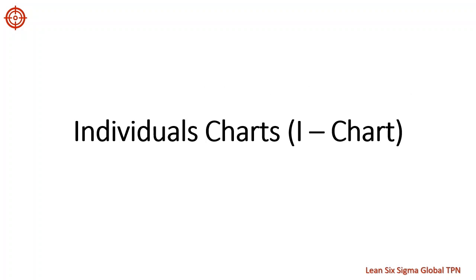Let's talk about the individual chart or I chart. An individual chart is a control chart of individual observations. We can use the individual chart to track the process level and detect the presence of special causes when the sample size is one.